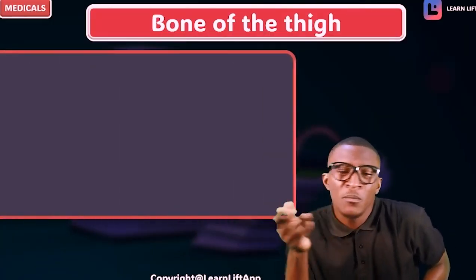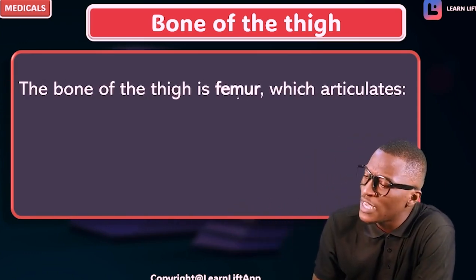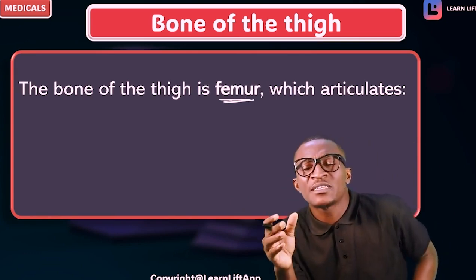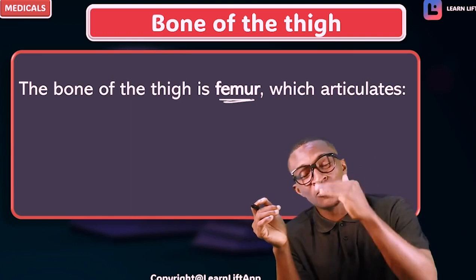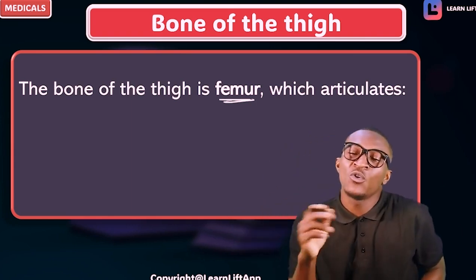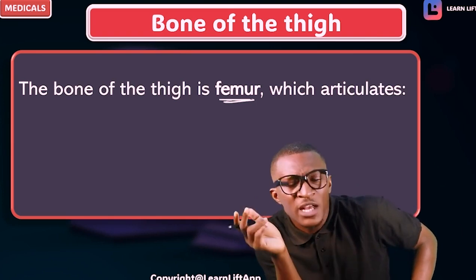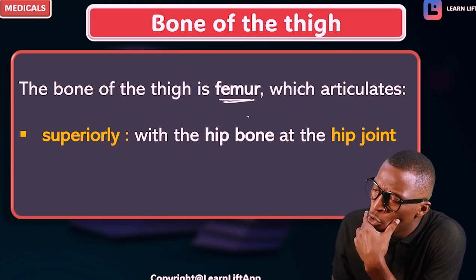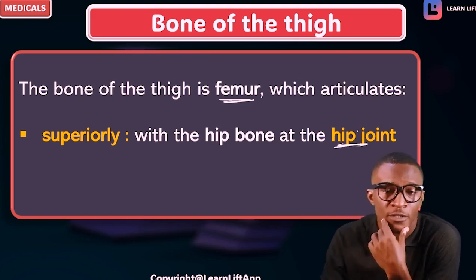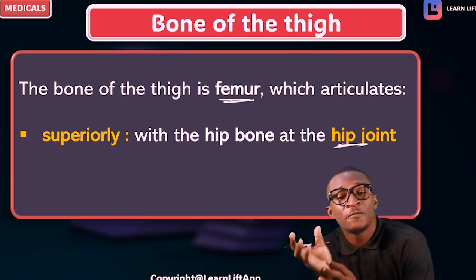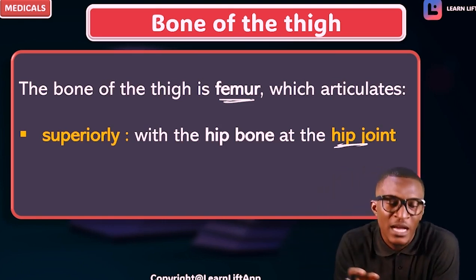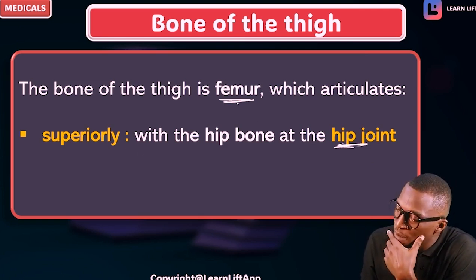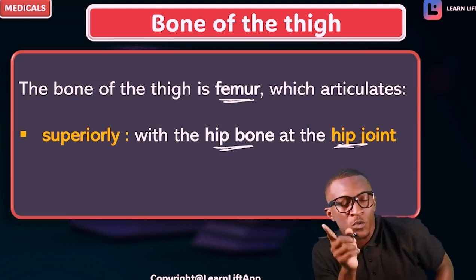Now, what is the bone of the thigh? The major bone of the thigh is called the femur. Take note that the femur is the only bone in the thigh. This bone of the thigh has articulations — superiorly and inferiorly. Superiorly, the femur binds with the hip bone to form what we call the hip joint. The head of the femur fits into the acetabulum and the hip joint is formed.